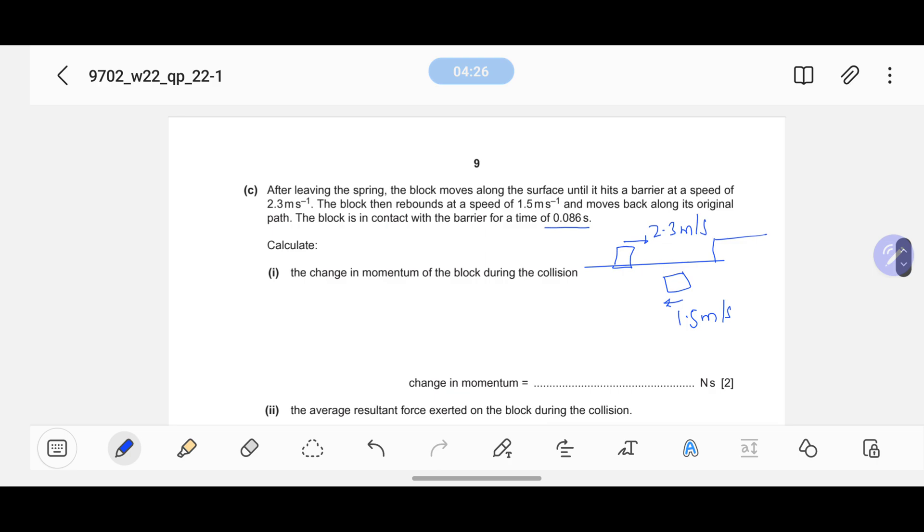Let's find the change in momentum. Momentum equals mass times change in velocity. I already know the mass, that was 0.25. Change in velocity: whenever there are two velocities, we'll add both of them. 2.3 minus - minuses because I need to find the change - then minus 1.5. Both of them will be added and my change in momentum would be 0.95 newton second.